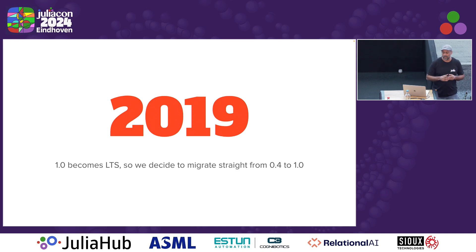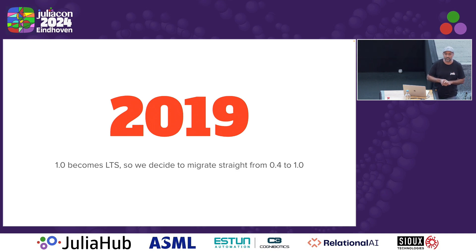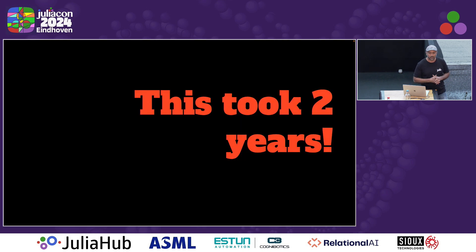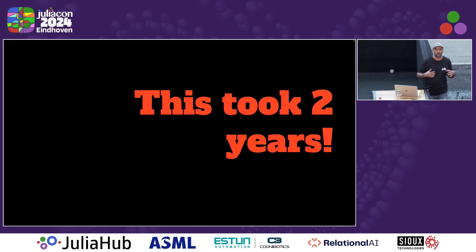So in about 2018, Julia 1.0 came out, and in 2019 it became the long-term support release. We decided we're going to try migrating to 1.0. The recommendation was: first move to 0.7, you'll get a lot of deprecation errors, fix all of them, and then 1.0 should be easy. But that was just taking so long because we had this huge code base — trial and error one module at a time. So we decided to just go directly to 1.0. But this whole process took more than two years. While we were migrating to 1.0, versions 1.1, 1.2, 1.3, 1.4, and 1.5 came out.